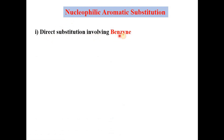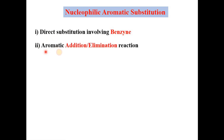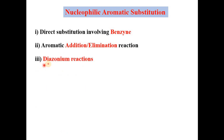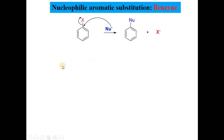The first one is the direct substitution involving a benzyne intermediate, where we substitute the hydrogen by a nucleophile. The second way is aromatic addition-elimination reactions, which occur involving electron-withdrawing groups that activate the ring. The third one is the diazonium reactions — the conversion of the ring into a diazonium salt — which is very important and produces a variety of products.